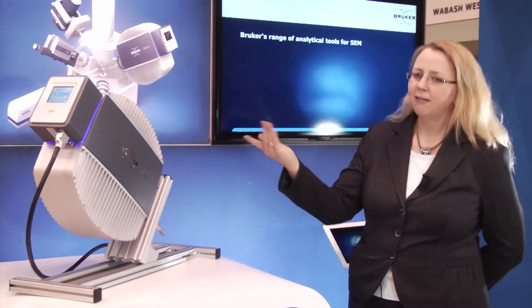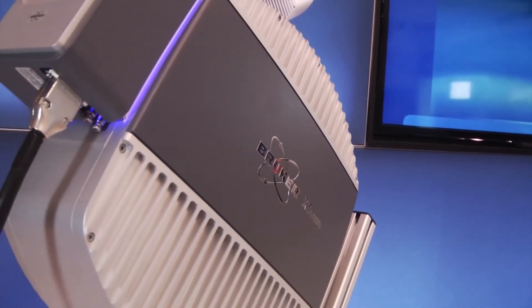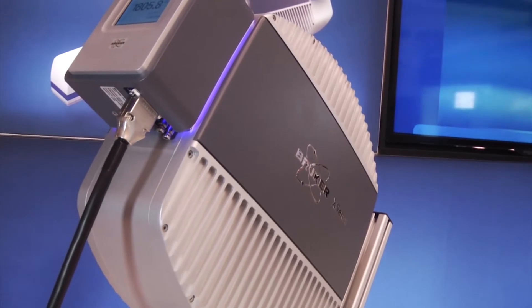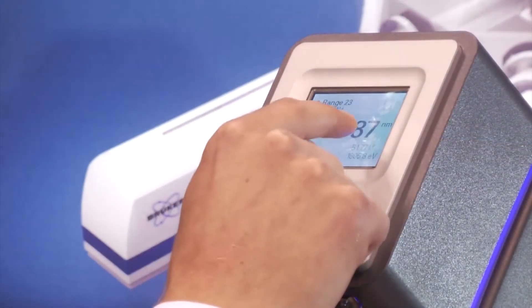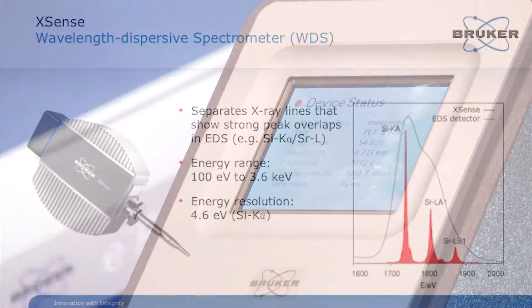This is our Wavelength Dispersive Spectrometer. We call it the X-Sense because it allows us to detect trace elements with high sensitivity and we can separate X-ray lines that show typically strong peak overlaps in EDS.